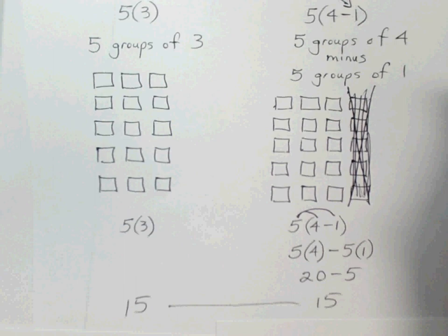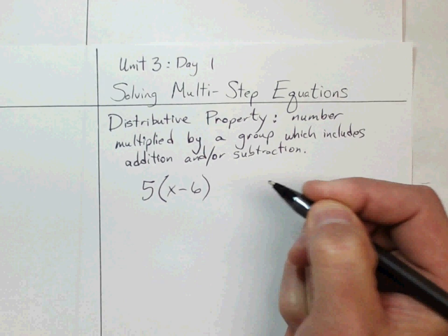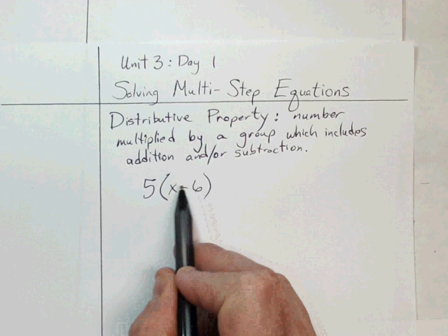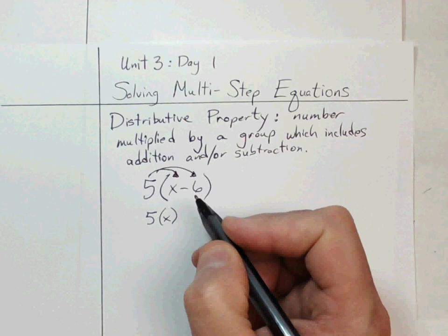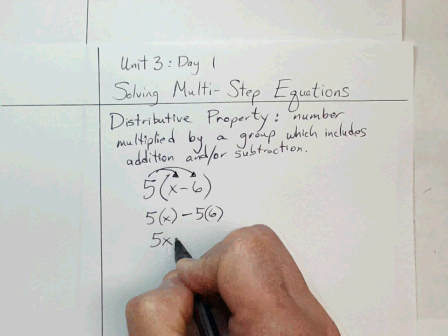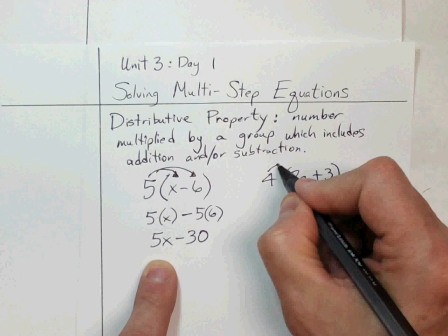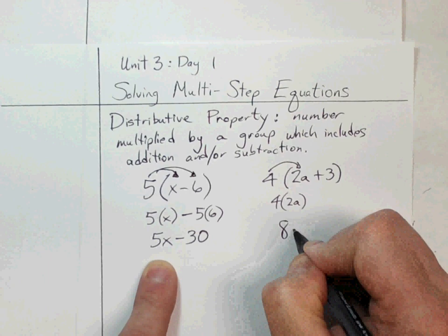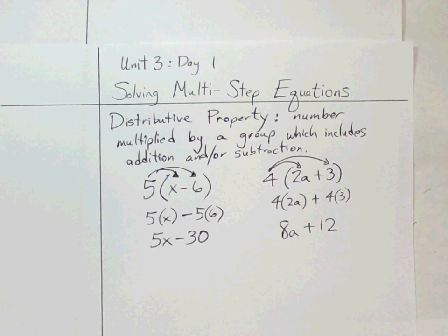That was the arithmetic version of the distributive property. Now in algebra we'll see examples like five times the group (x minus six). We need to get rid of the parentheses by distributing — multiplying the five by everything in the group. Five times x is 5x, minus five times six gives us 5x minus 30. Similarly, four times (2a plus 3): four times two is eight, so we get 8a, and four times three gives us plus twelve — giving 8a plus 12.